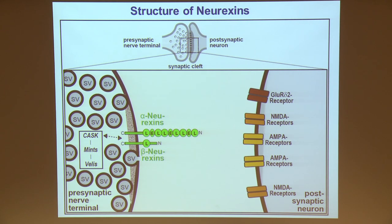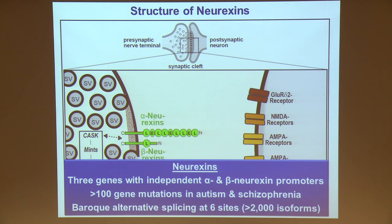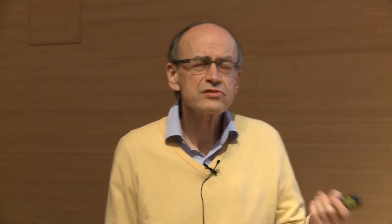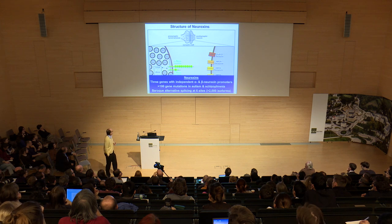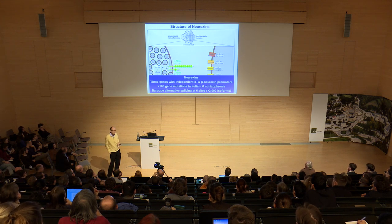Neurexins come in two principal forms: alpha-neurexins with a long extracellular sequence composed of LNS and EGF-like domains, and beta-neurexins, transcribed from an internal promoter of the alpha-neurexin gene, containing only a single LNS domain. Otherwise they are typical type 1 transmembrane proteins. There are three genes for alpha- and beta-neurexins.